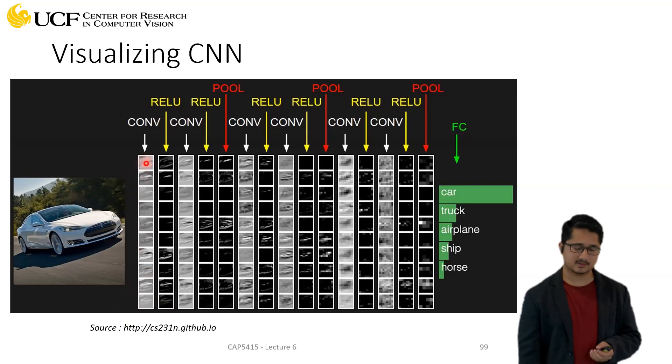Each of this is the activation map or the output of one filter. So when you apply that filter to this image you get activation map like this. The second filter you will get something like this.